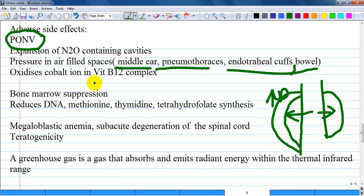Nitrous oxide causes bone marrow suppression, affecting DNA synthesis and metabolism of methionine, thymidine, and tetrahydrofolate. The mechanism involves oxidizing cobalt ions in vitamin B12 complex, impairing its ability to act as a cofactor in reactions. This causes bone marrow suppression and reduces DNA synthesis, leading to megaloblastic anemia, B12 deficiency, subacute degeneration of the spinal cord, and teratogenicity.